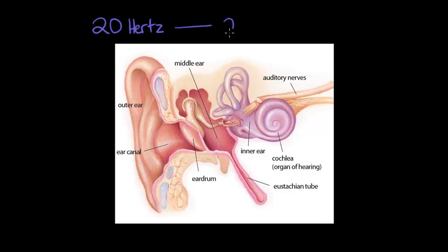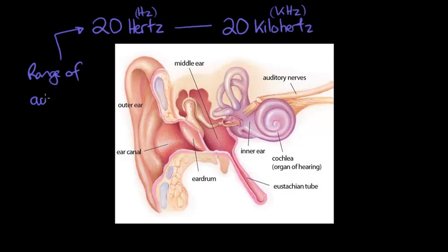all the way up to 20,000 hertz, that's 20 kilohertz. So hertz is Hz as a shortening and kilohertz is kHz, that's 20,000 waves or sound waves per second and that is the range of frequencies or the range of audible frequencies.